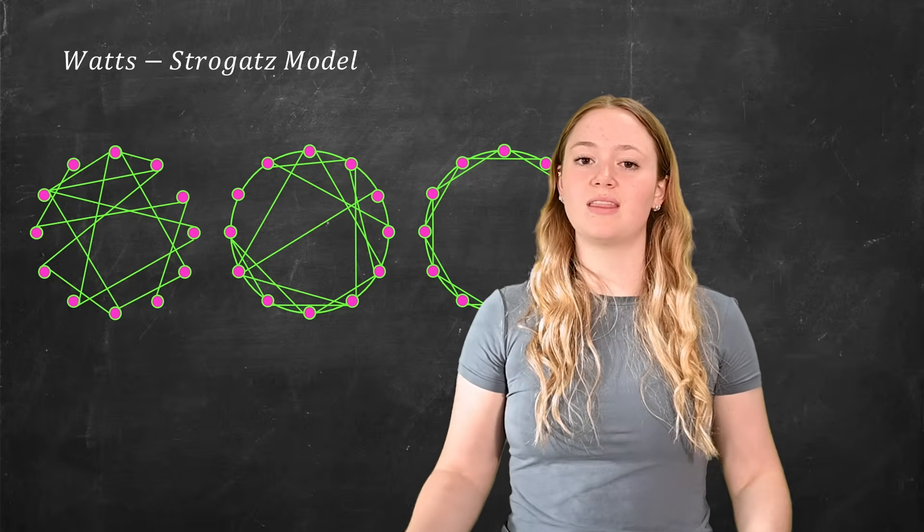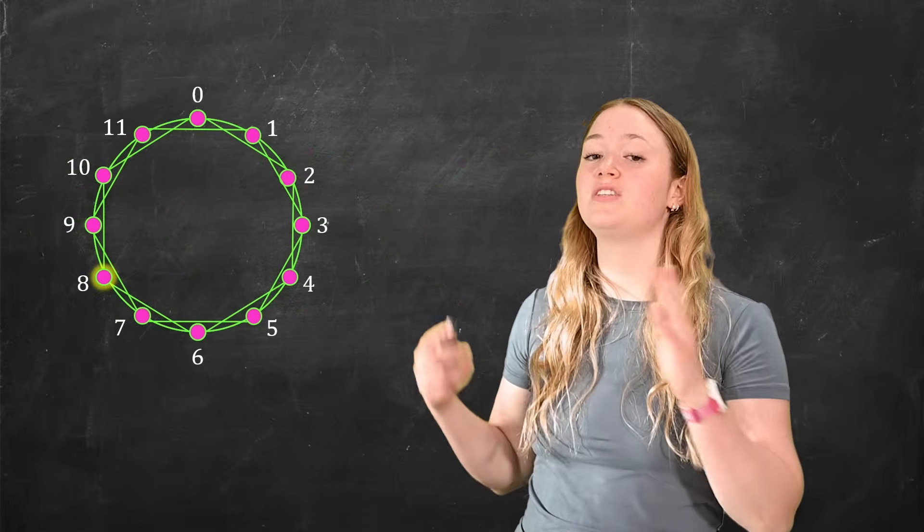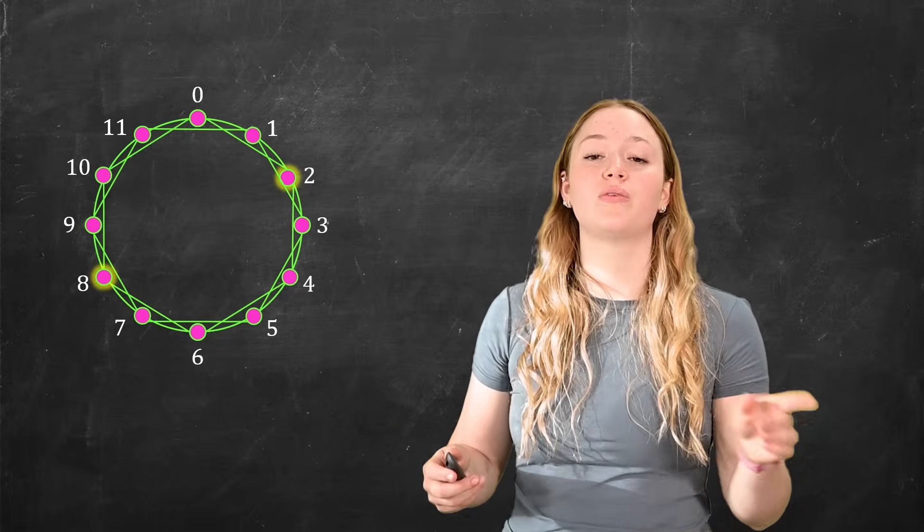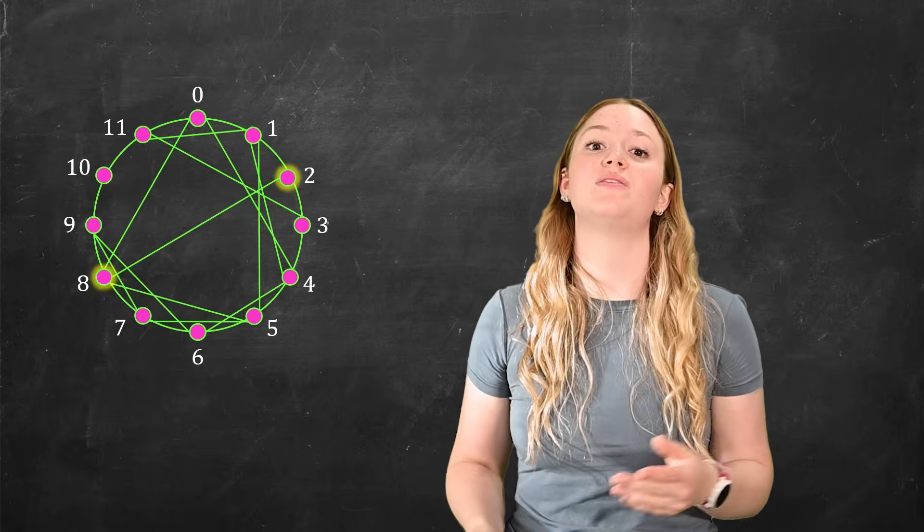To explain a path length, we can kind of look at this graph here, where previously, in order to get from eight to two, we would have to take three different paths. Whereas now, because we have that shortcut, we only take one.